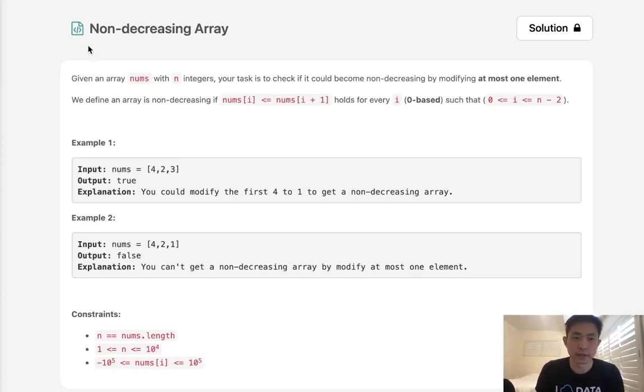Welcome to Maisel Eko Challenge. Today's problem is non-decreasing array. Given an array nums with n integers, your task is to check if it could become non-decreasing by modifying at most one element.